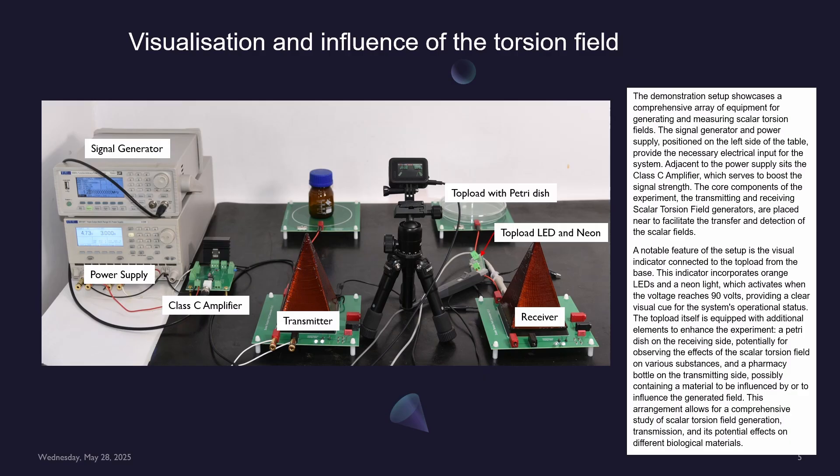The core components of the experiment, the transmitting and receiving scalar torsion field generators, are placed near to facilitate the transfer and detection of the scalar fields. A notable feature of the setup is the visual indicator connected to the top load from the base. This indicator incorporates orange LEDs and a neon light, which activates when the voltage reaches 90 volts, providing a clear visual cue for the system's operational status.